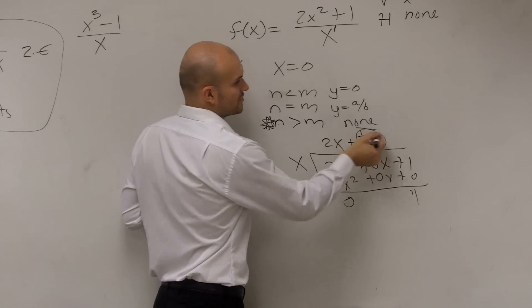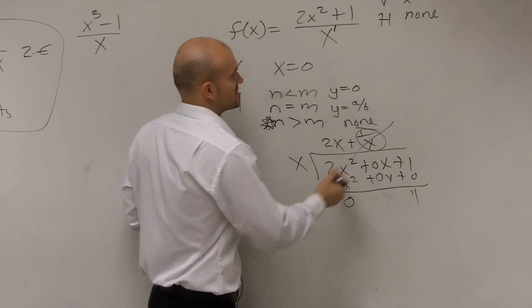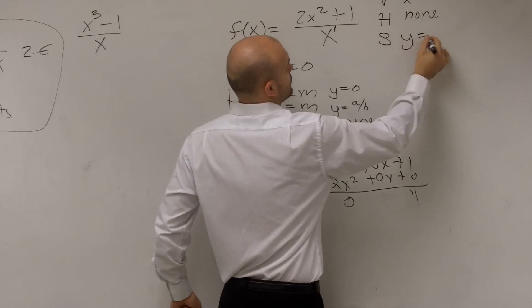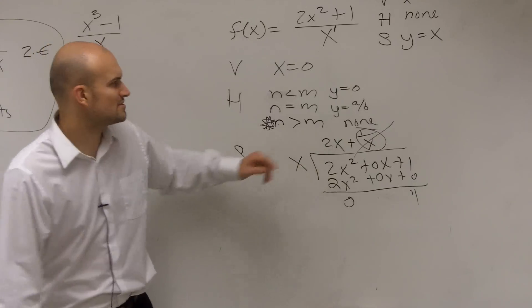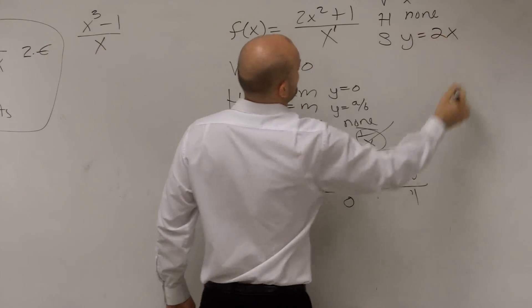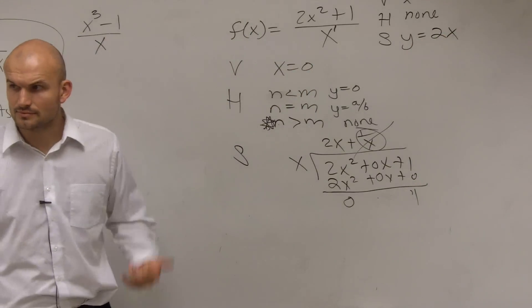1 over x, which again goes to infinity or 0. So we're just left with our slant is y equals x, right? Just take your quotient. Oh, I'm sorry, y equals 2x, right? Thank you. Okay, cool.